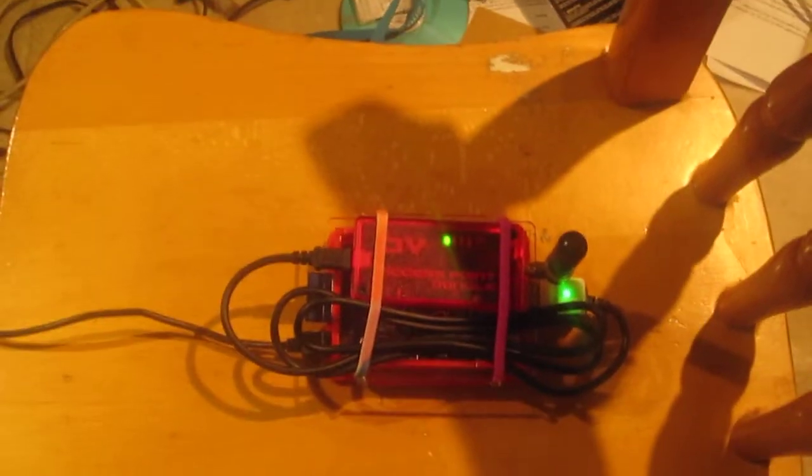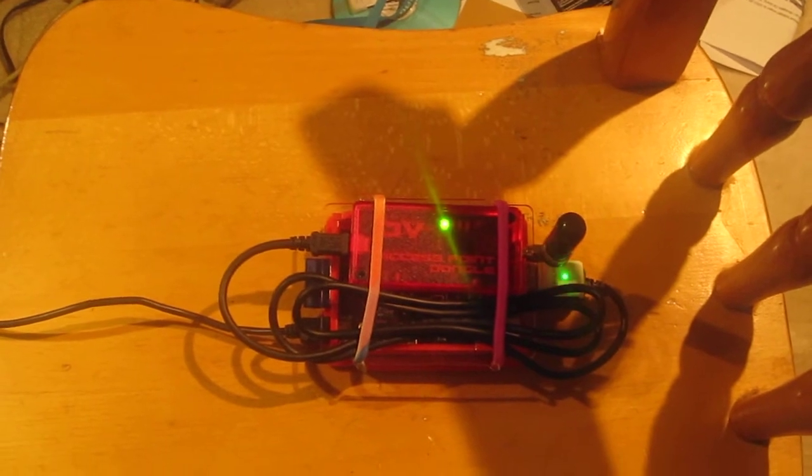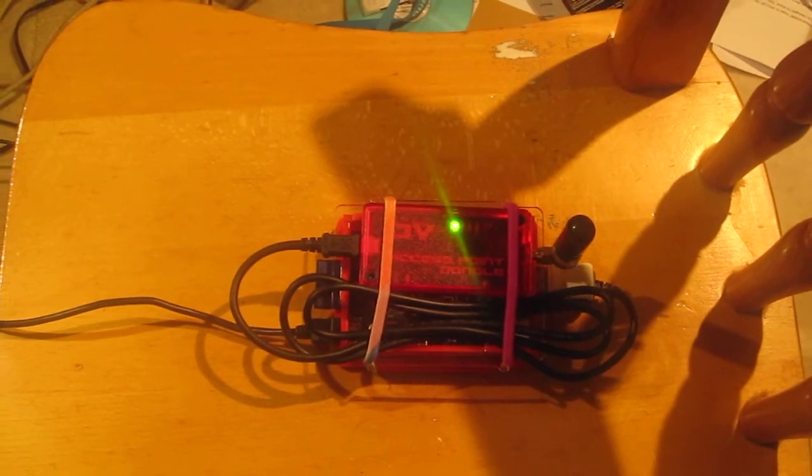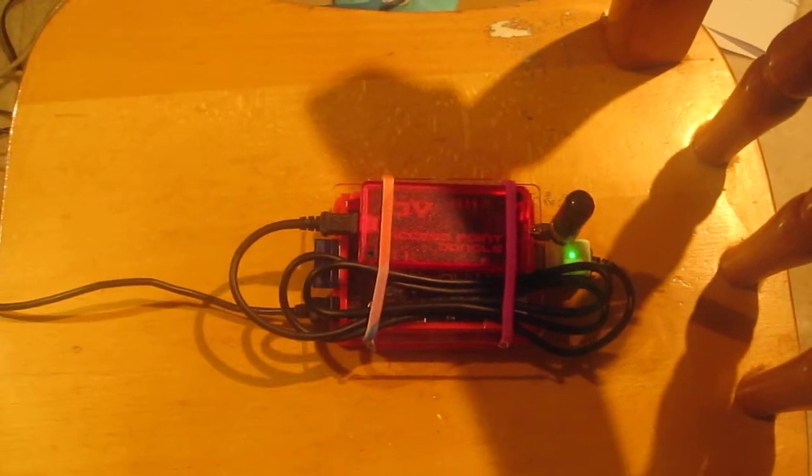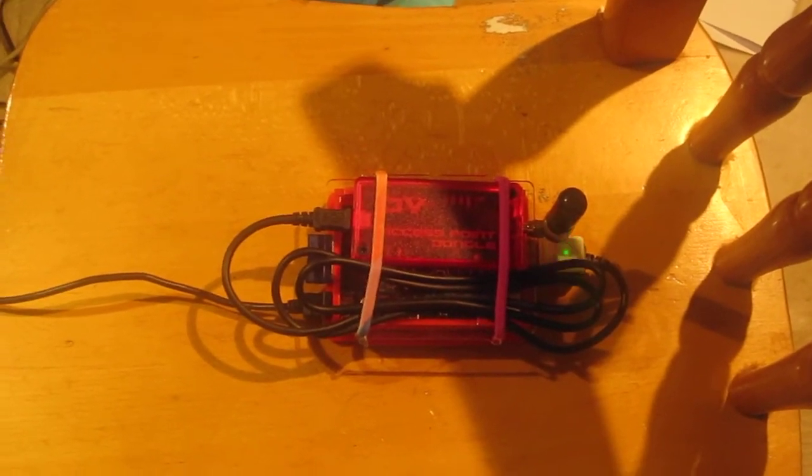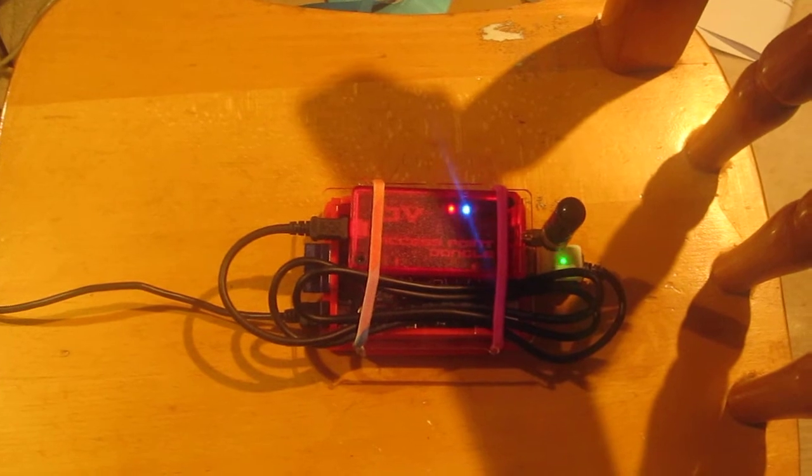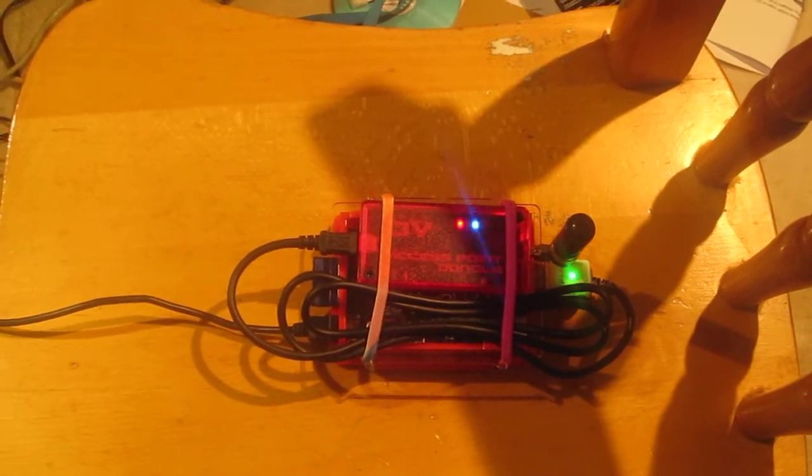You can see the green light flashing away on the right hand side, and the power cord you can see coming away from it is the power supply to the Raspberry Pi which is powering everything.